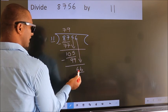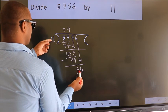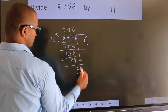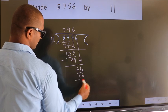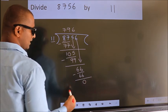When do we get 66? In the 11 table: 11 sixes, 66. Now we subtract. We get 0.